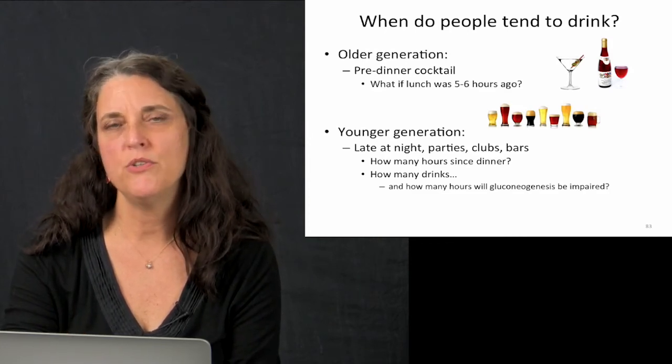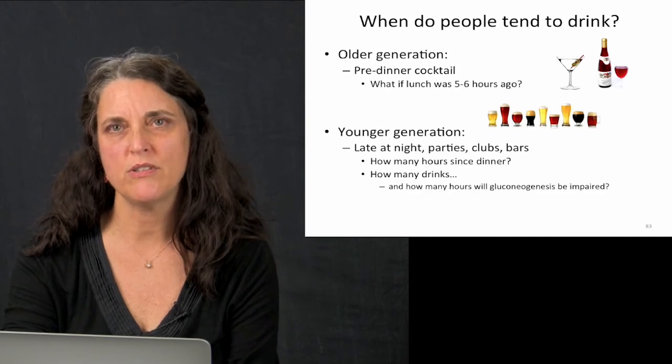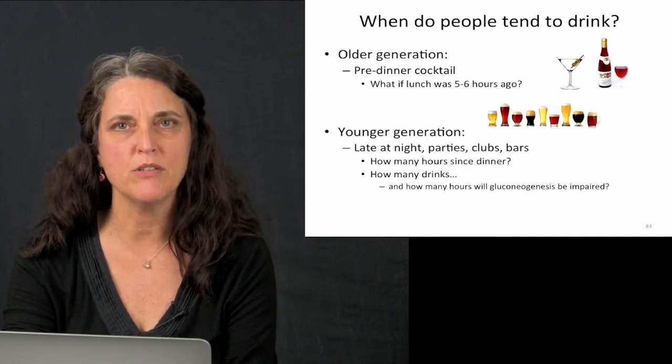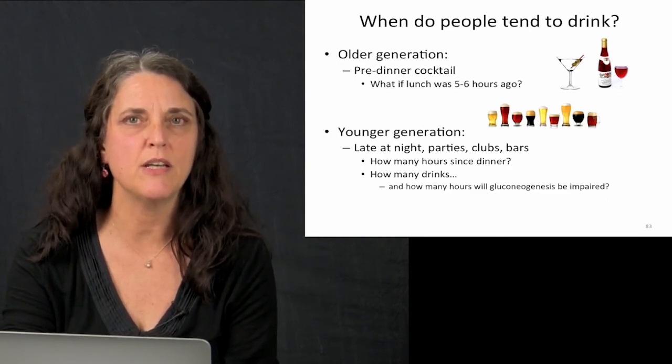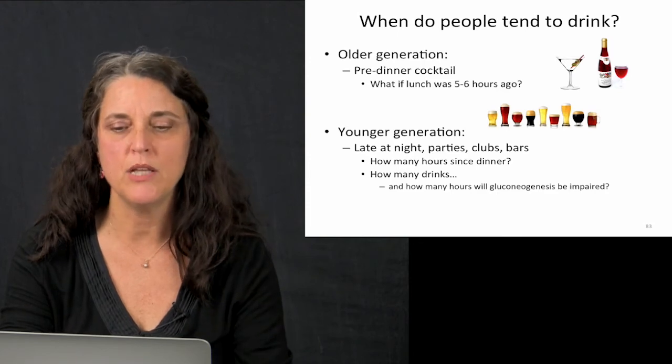Generally, one drink impairs you for at least two hours. So if somebody has three beers, six hours or more, their liver's impaired at releasing glucose, that's a significant amount of time that you can be low.